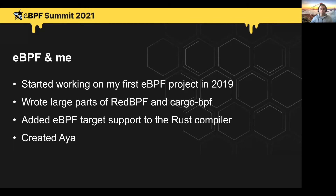I started working on eBPF in 2019. I wrote large parts of the eBPF library and then I also wrote Cargo BPF, which is a program that at the time was needed in order to build Rust code to eBPF bytecode. I then moved on from those projects and started working on adding eBPF target support to the Rust compiler itself. That work was finally merged a couple of months ago, so all you need today in order to compile Rust to eBPF bytecode is just the regular standard Rust compiler.